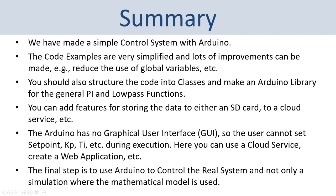The code examples shown in this tutorial are very simplified and lots of improvements can be made — for instance reducing the use of global variables, structuring the code into classes, and making an Arduino library for the general PI controller and low pass filter so we can reuse them in other applications. You can also add features for storing data to an SD card, a cloud service, or a database. One limitation is that the Arduino system has no graphical user interface, so the user cannot set setpoint, Kp, Ti etc. during execution — but you could use a cloud service or web application to set these parameters remotely.